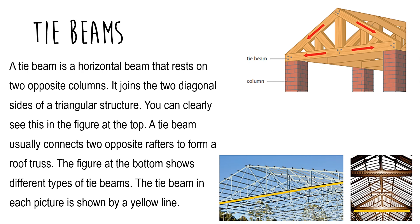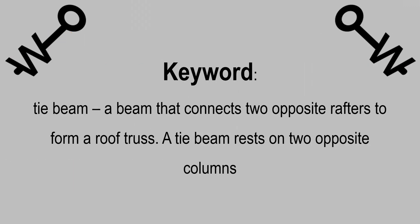And the last thing we are talking about is tie beams. A tie beam is a horizontal beam that rests on two opposite columns. It joins the two diagonal sides of a triangular structure. A tie beam usually connects two opposite rafters to form a roof truss. The figure at the bottom shows different types of tie beams, with each tie beam indicated by a yellow line. Key word — tie beam: a beam that connects two opposite rafters to form a roof truss, resting on two opposite columns.